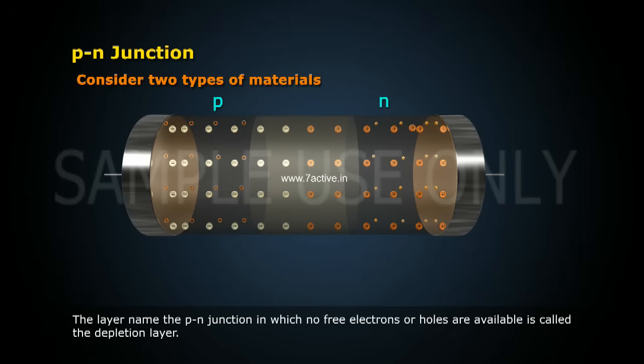The layer near the P-N junction in which no free electrons or holes are available is called the depletion layer.